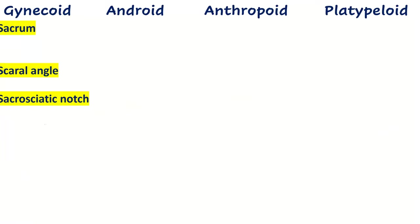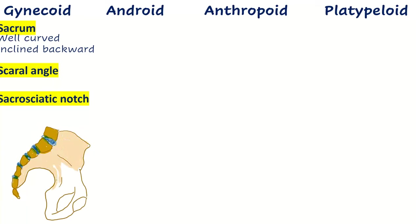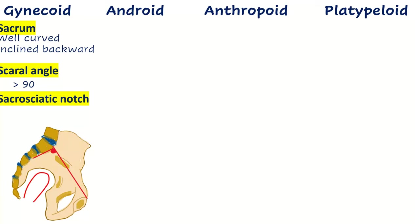In gynecoid pelvis, the sacrum is well-curved and inclined backwards. This makes the sacral angle more than 90 degrees. The sacral angle is the angle between the pelvic inlet and the first two sacral vertebrae. The sacrosiatic notch is wide and shallow.